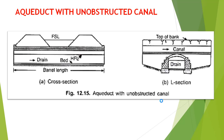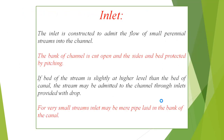An inlet is constructed to admit the flow of small perennial streams into the channel. The bank of the channel is cut open and the sides and bed are protected by pitching. If the bed of the stream is at a slightly higher level than the bed of the canal, the stream may be admitted to the channel through an inlet provided with a drop. For very small streams, the inlet may be merely a pipe laid in the bank of the canal.